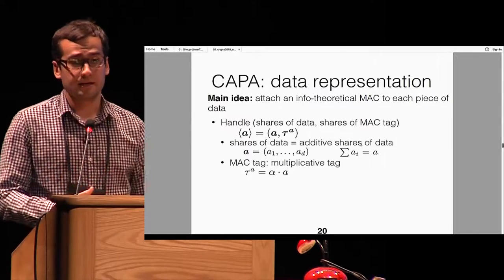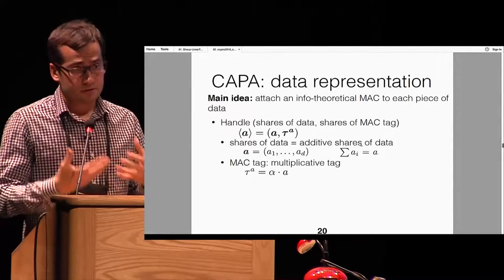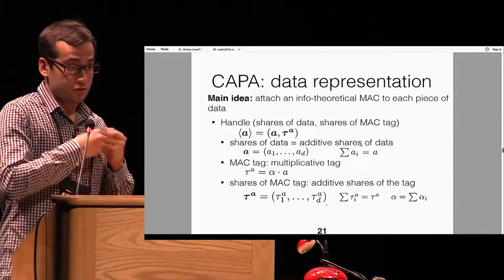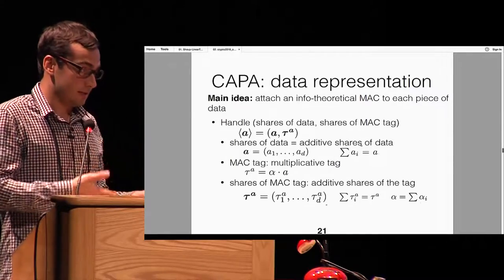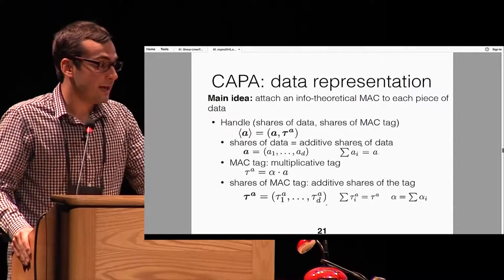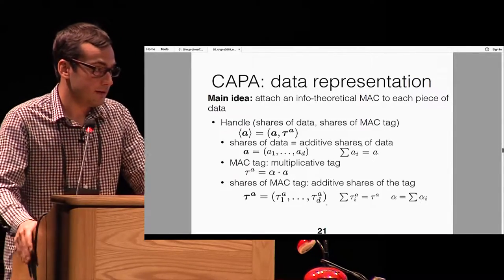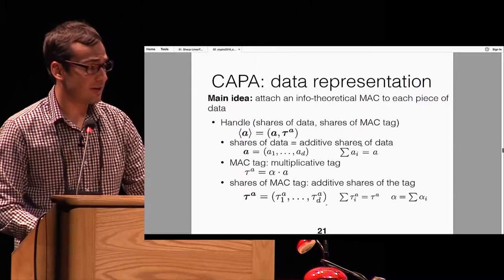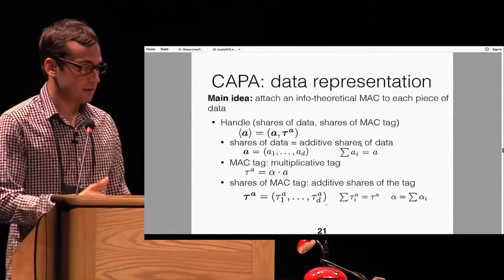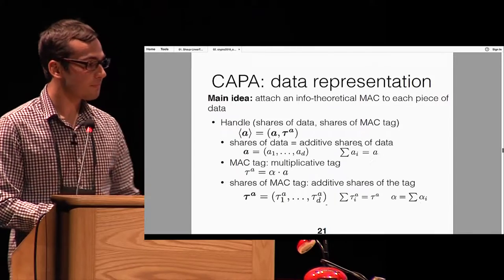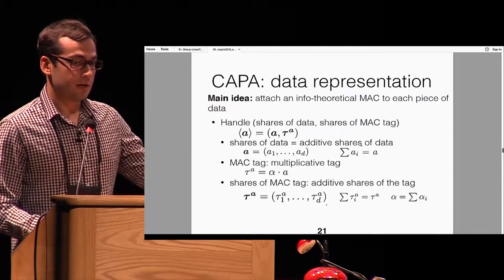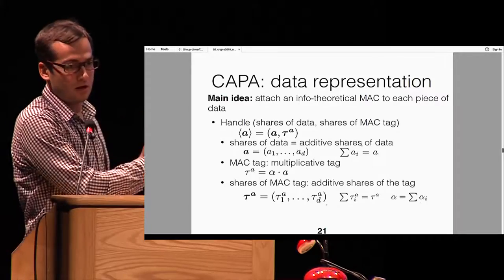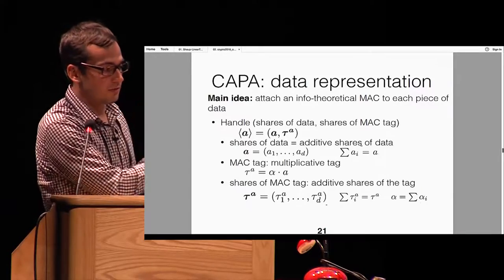The MAC tag — which you don't directly handle unshared — is the value multiplied by a secret constant that is the MAC key. We handle this MAC tag also shared; otherwise it would leak and be more susceptible to fault attacks. So we also apply additive masking to this tag, splitting τ(A) into D shares that sum to the original tag. The MAC tag is also shared but does not have a tag itself. If you're already familiar with SPDZ, this sounds very familiar — it's exactly the same.